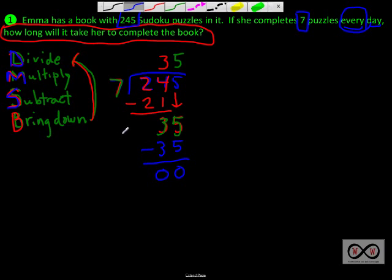And our directions were to check with multiplication, so we can do that. So right now I'm thinking, if Emma has a book with 245 puzzles in it and she completes 7 puzzles every day, it will take her 35 days to complete the book if she does 7 per day. So let's check it out. We'll use multiplication to check. So we've got 35 times 7. 7 times 5 is 35. And 7 times 3 is 21 plus 3 is 24. So that should check out. We've got 245 here and 245 there.